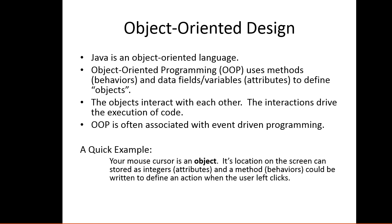A quick example: your mouse cursor is an object. Its location on the screen can be stored as integers - these would be the attributes. And a method might be when you left-click.